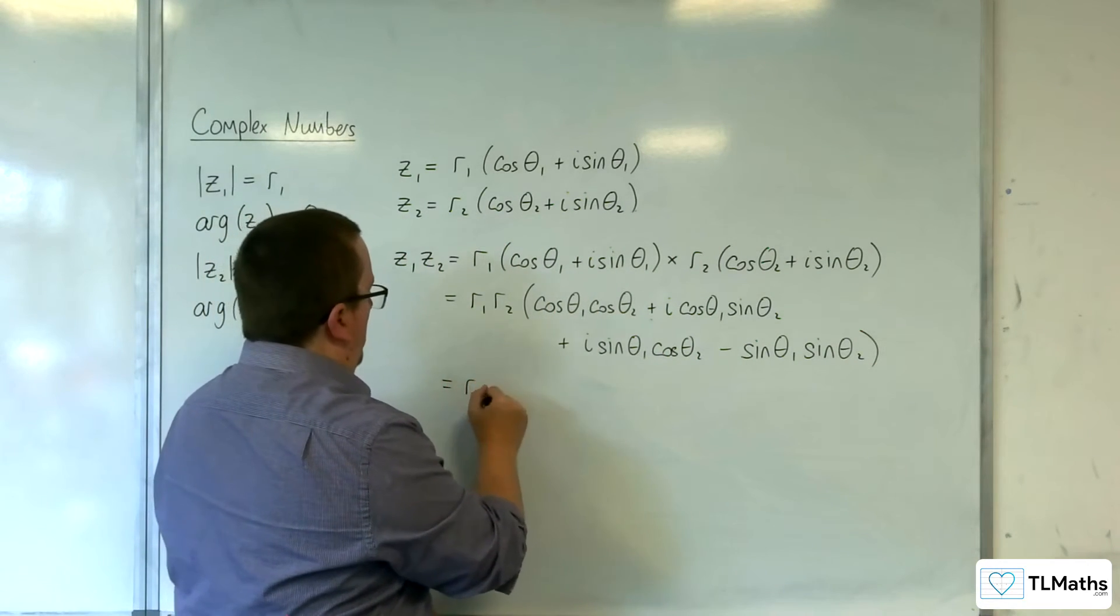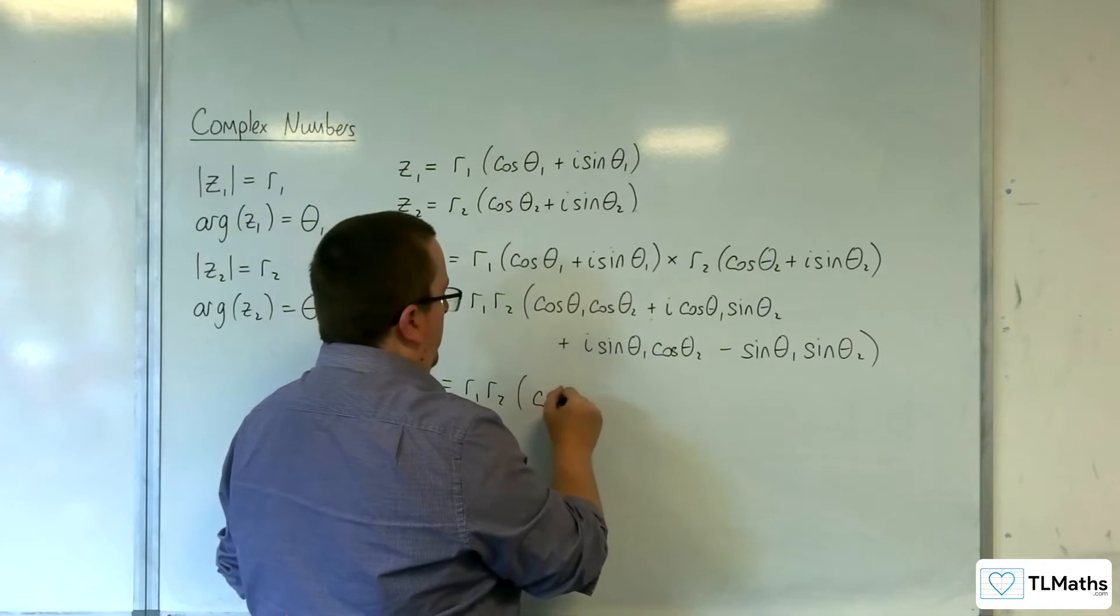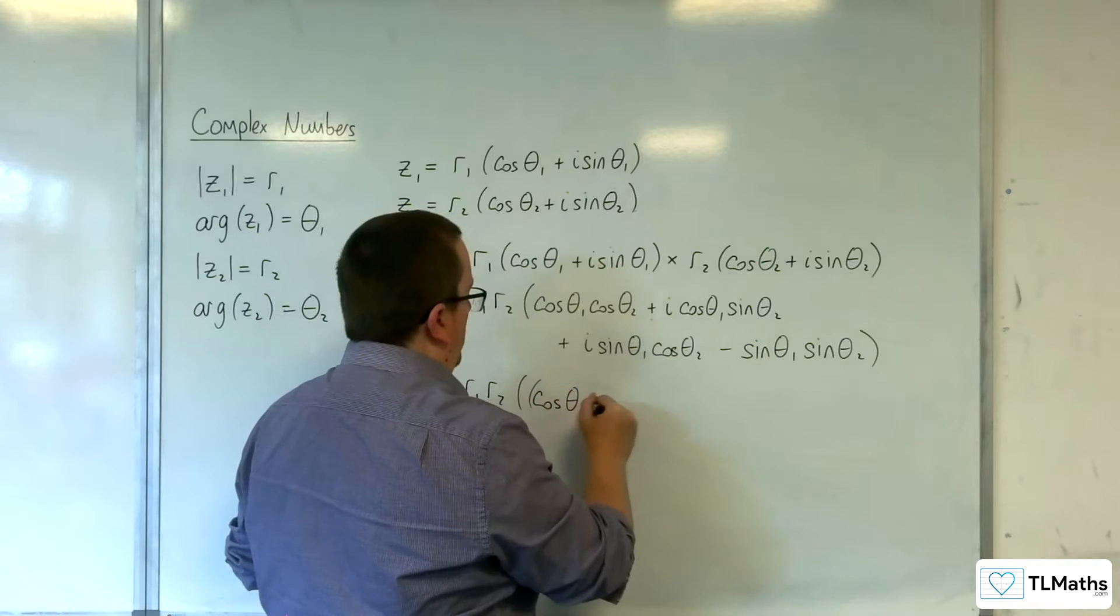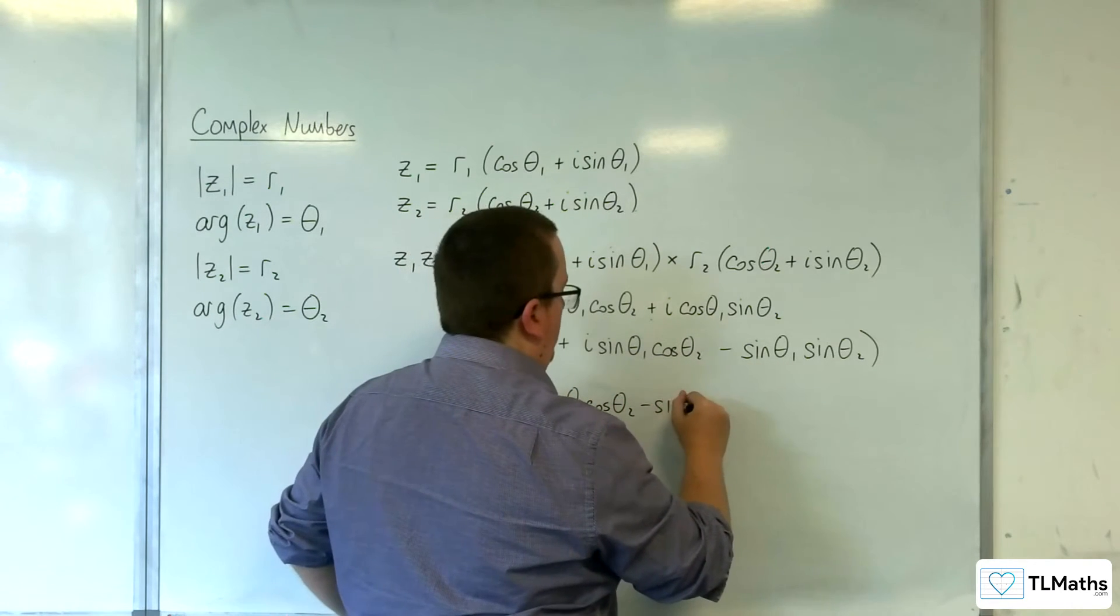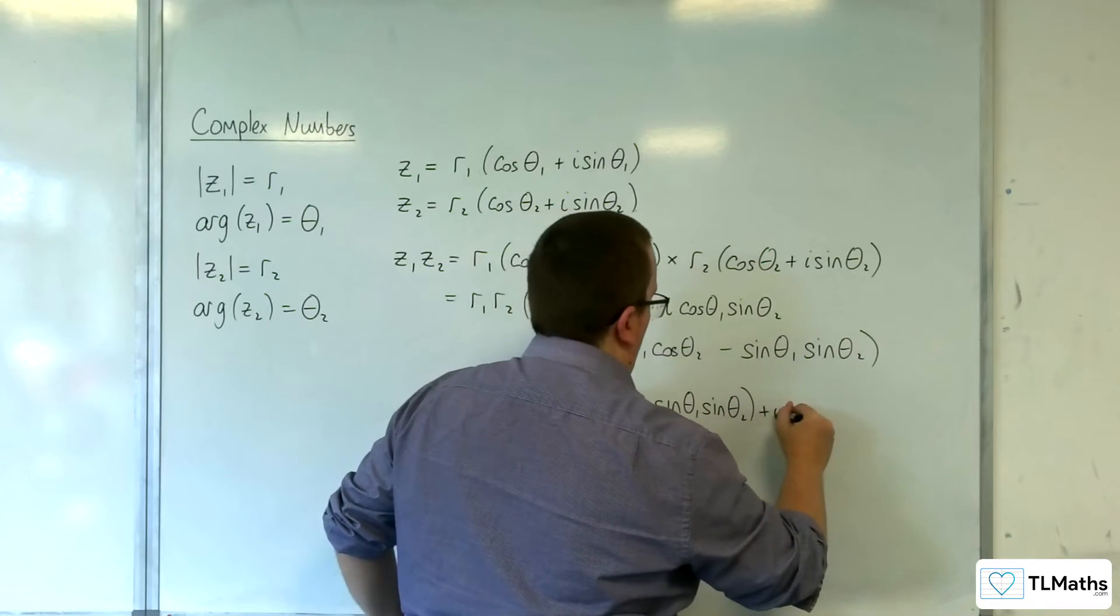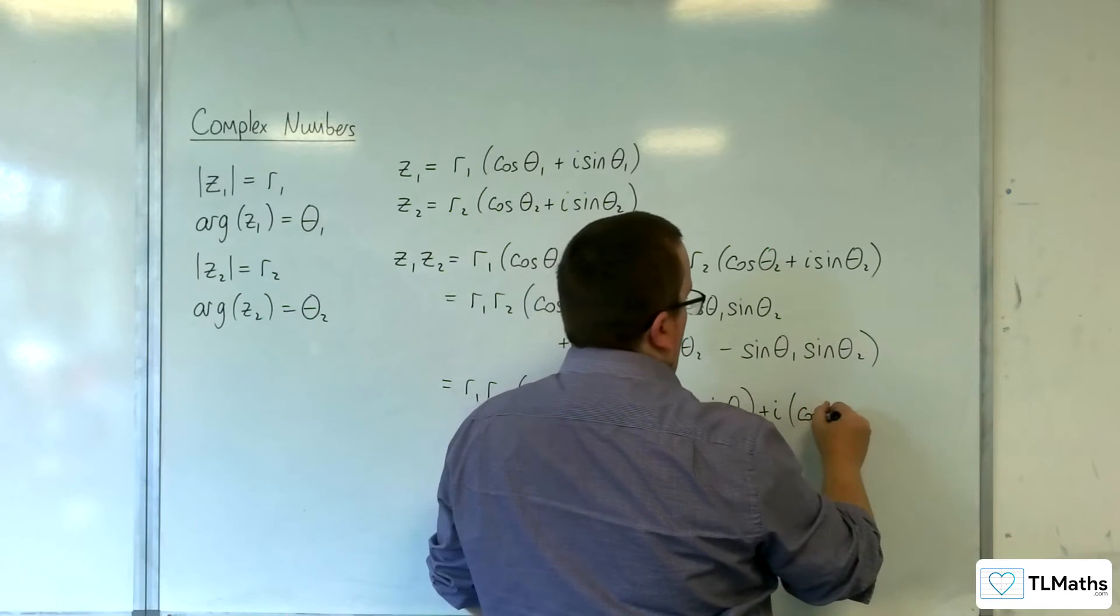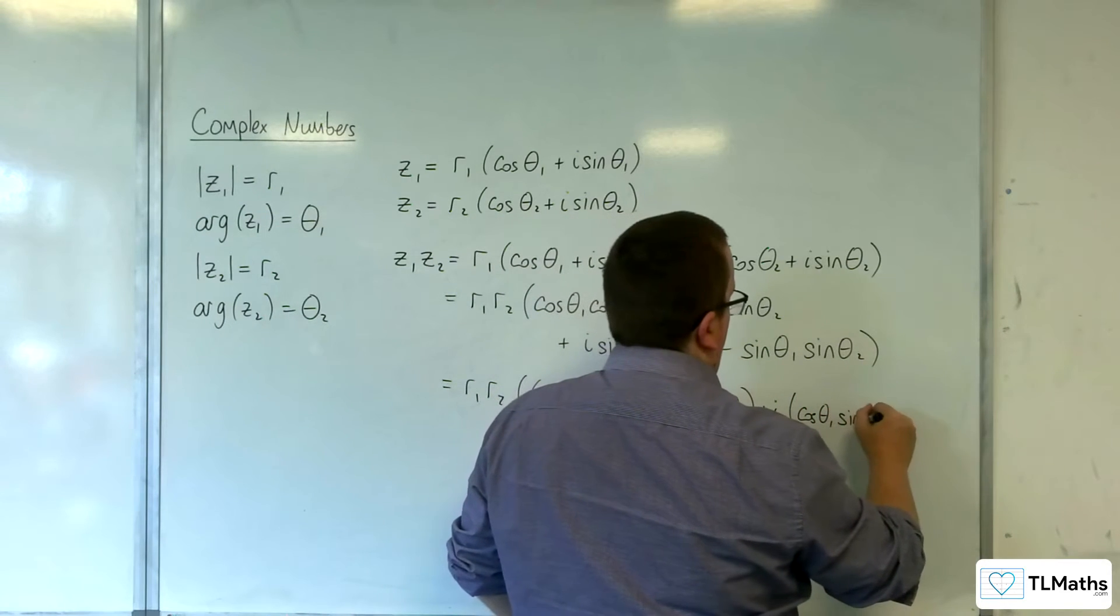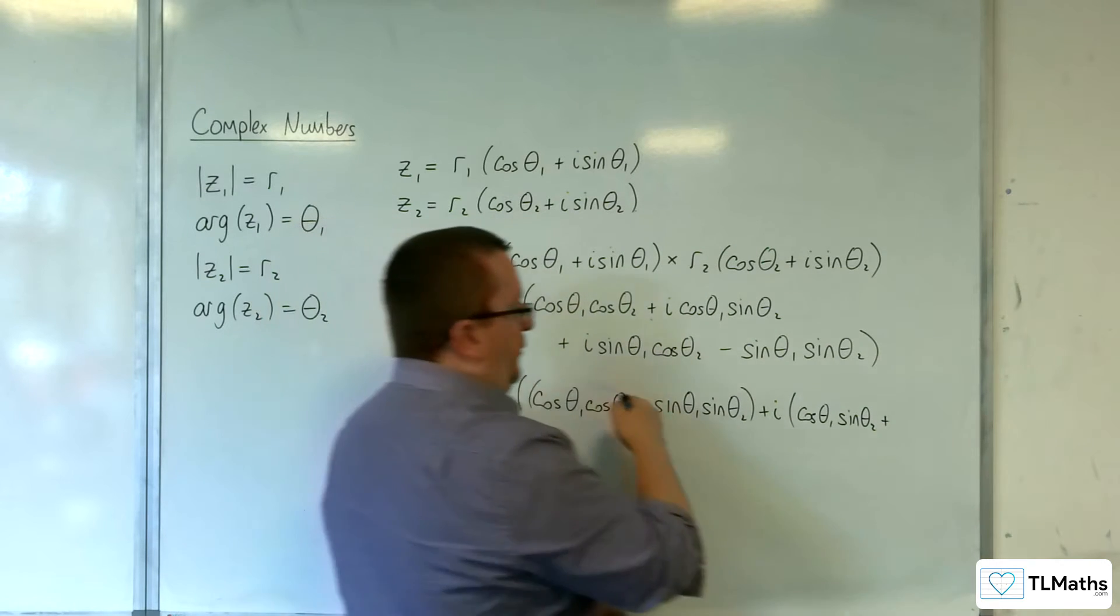Let's group the real and imaginary parts together. So for the real parts, we've got the cosine theta1 cosine theta2 and the minus sine theta1 sine theta2, plus i times cosine theta1 sine theta2 plus sine theta1 cosine theta2.